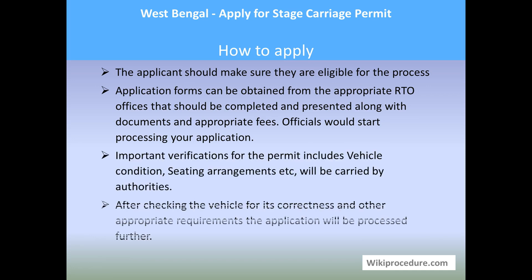You can also get application forms directly from the RTO office on your visit. Collect the form, fill it in, attach all the required documents, and submit it to an officer there. The officer will indicate the amount you need to pay and direct you to the right counter. After paying the fees and submitting your documents, the authorities will begin processing the application internally. An important physical inspection of the vehicle will be carried out — including its condition, seating arrangements, paintwork, and other requirements — before the final stage of granting the permit.